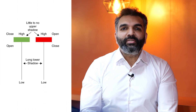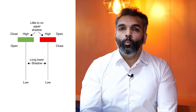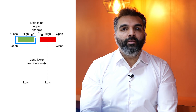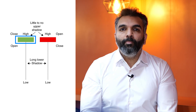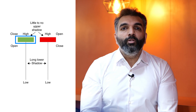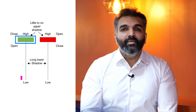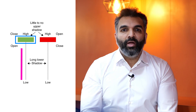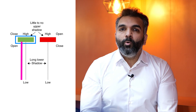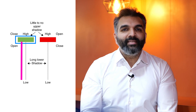Hanging man is a bearish reversal candlestick pattern in which the real body is located at the upper end of the trading range. In this formation, the lower wick is at least twice or thrice as long as the body, and the upper wick is small or non-existent.